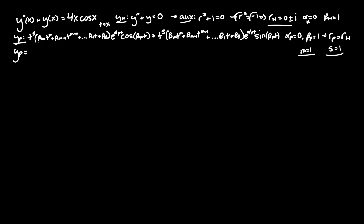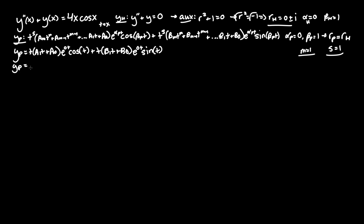So y_p = t·(a₁t + a₀)·cos(t) + t·(b₁t + b₀)·sin(t). Distributing the t gives: y_p = (a₁t² + a₀t)·cos(t) + (b₁t² + b₀t)·sin(t). This is the most straightforward form.